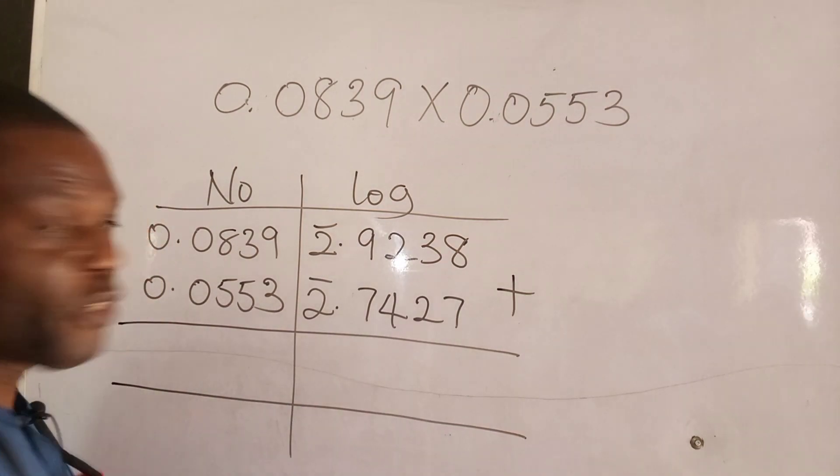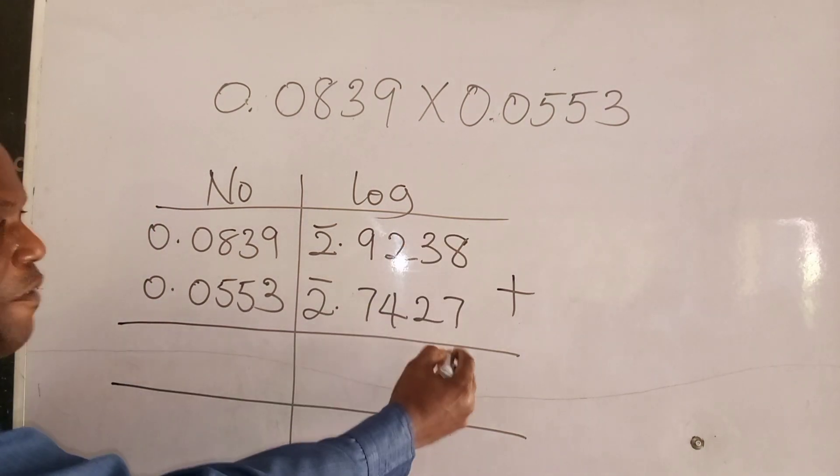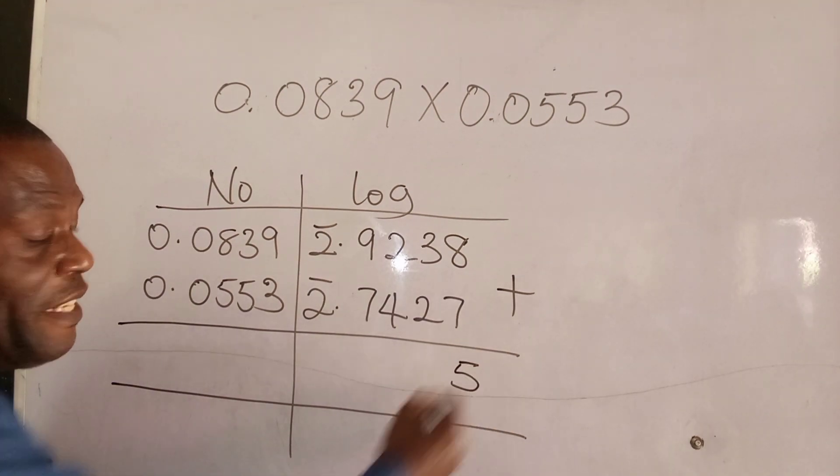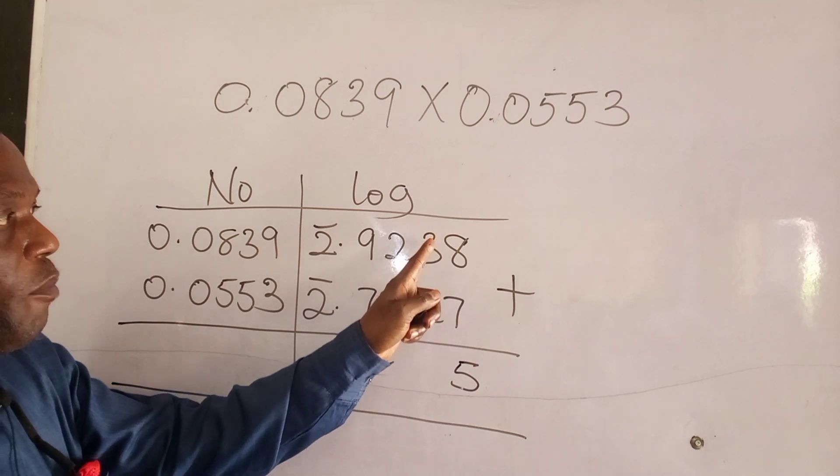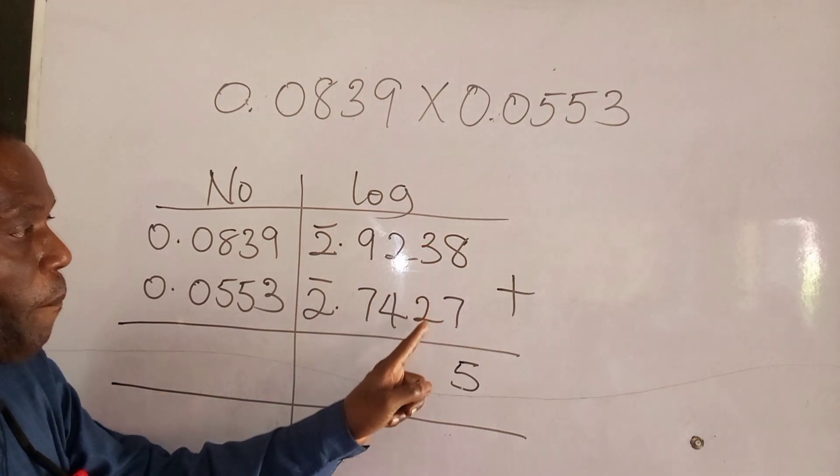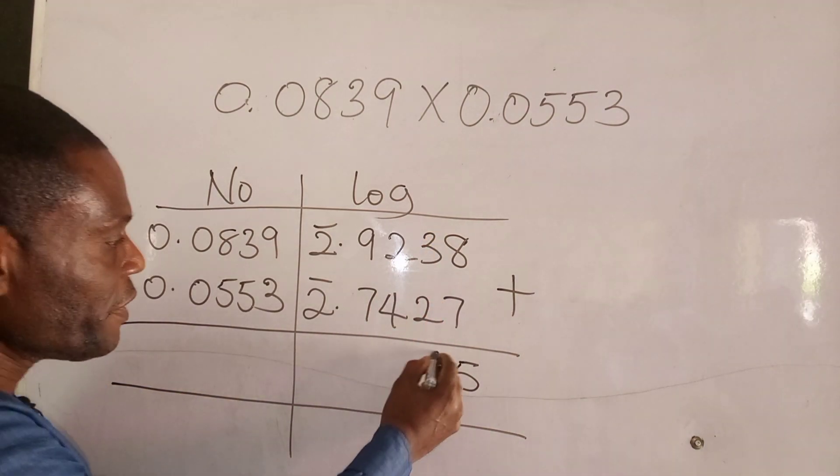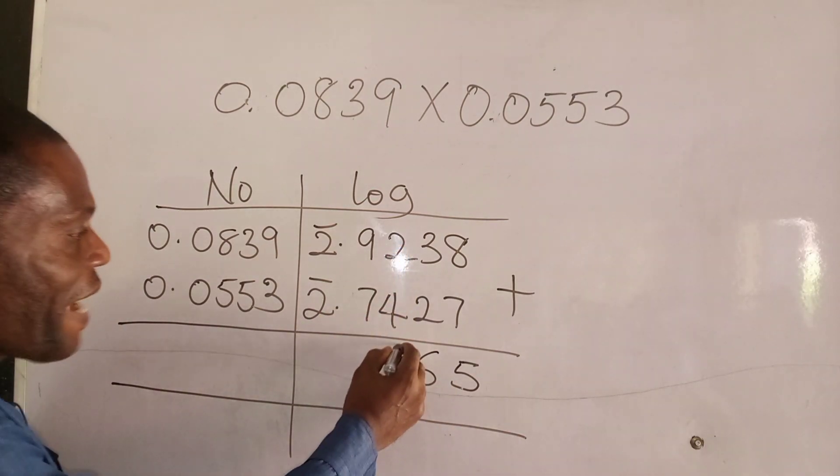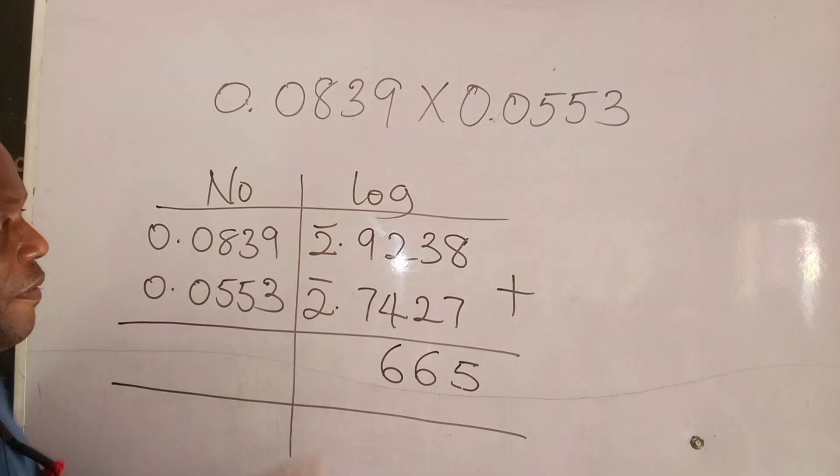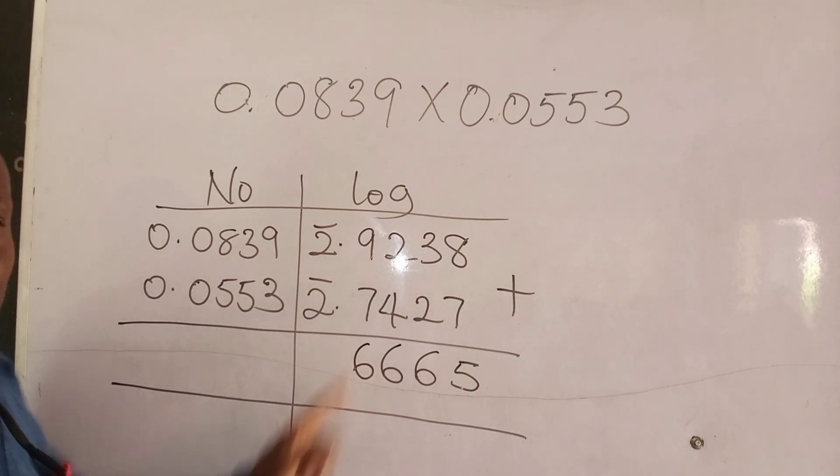Now here we are going to add. So what we have: 5 plus 7 is 12, carry 1. 1 plus 3 is 4, plus 2 is 6. Here we have 6. Here we have 6, right? Here we have 16, carry 1.